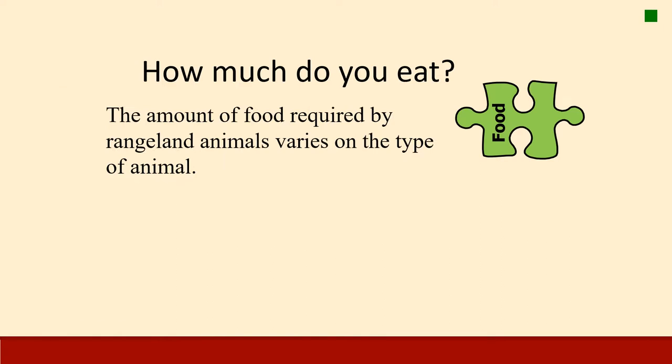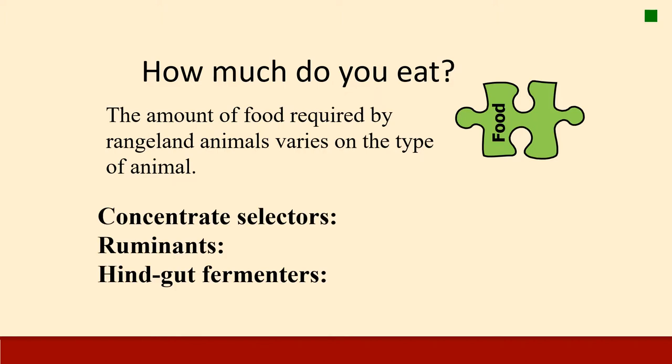When considering food and habitat, we need to think about how much the species we want in that habitat actually eat. Concentrate selectors eat about 0.25% of their body weight each day. For example, according to the Fish and Wildlife Service, a sage-grouse hen weighs between two and three pounds, so a three-pound hen would eat about 0.075 pounds of forage per day.